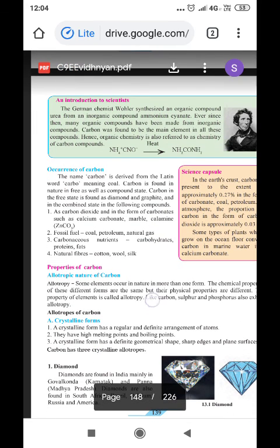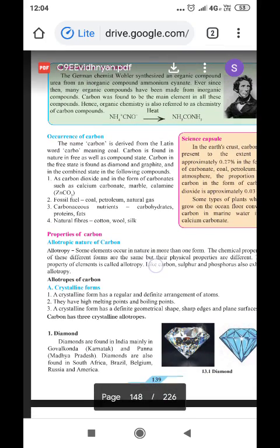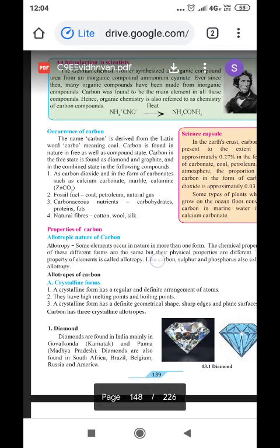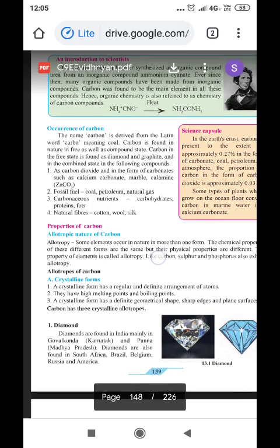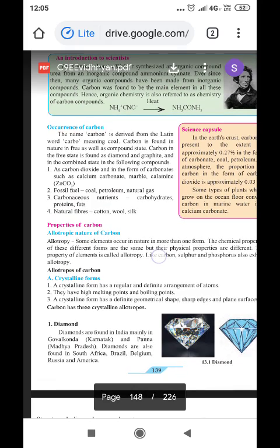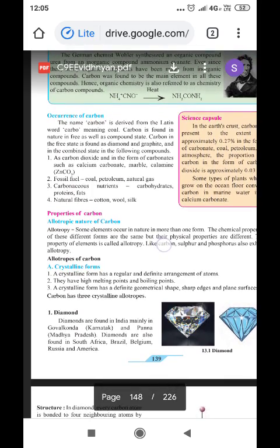Now, occurrence of carbon. The name carbon is derived from the Latin word carbo, meaning coal. Coal is found in nature in free as well as in the compound state. Carbon in the free state is found in diamond and graphite, and in the combined state, in the following compounds.